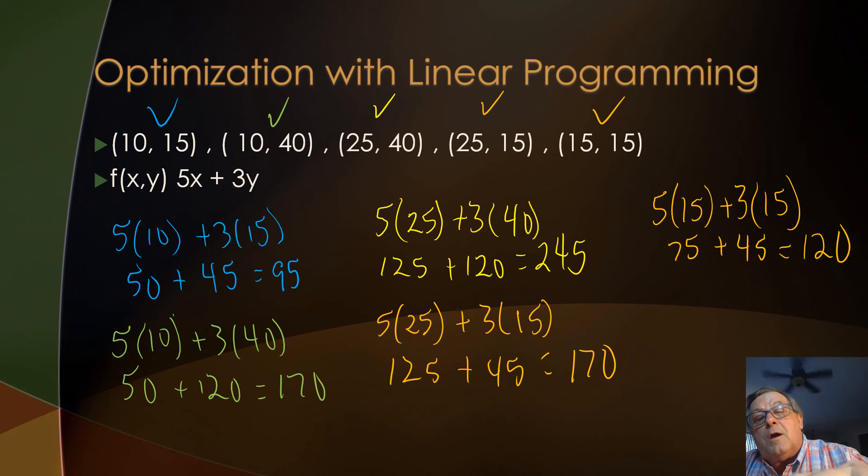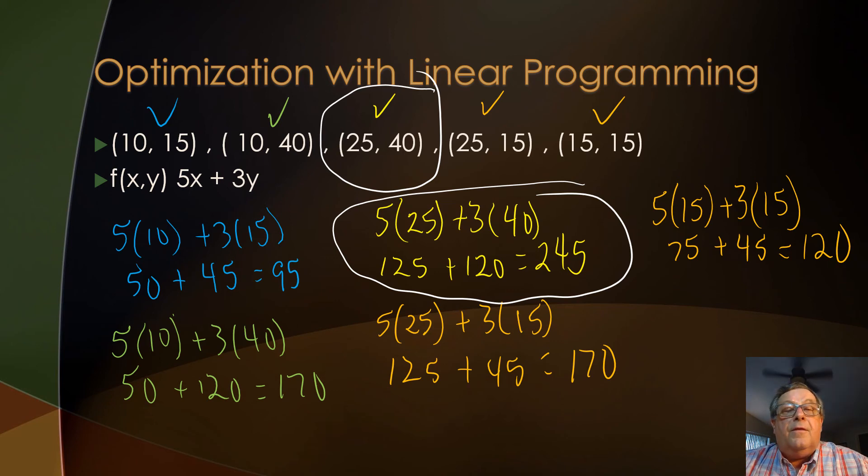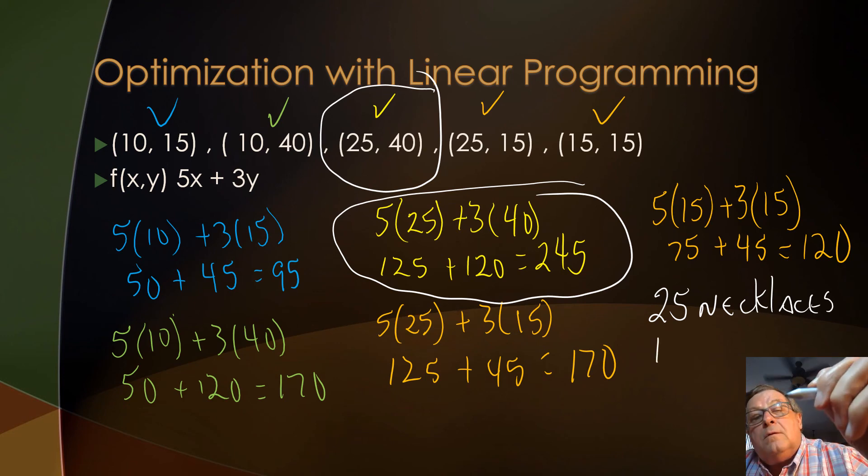Well it's this one right here, 245, or that vertices gives us the maximum profit. So we would then have be selling to get maximum profit we have 25 necklaces and 40 pairs of earrings. I can only say one word for all of this, shizam, shizam.